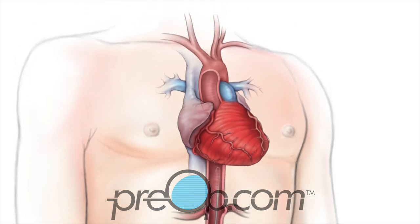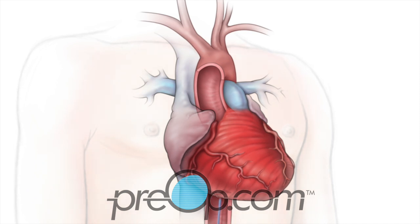Next, the long catheter is threaded through the guide in your artery up to your heart. Dye is given through the catheter and the x-ray camera is used to see it flow through the heart. The arteries that feed oxygen to your heart, the inside walls, and the shape of your heart are examined.